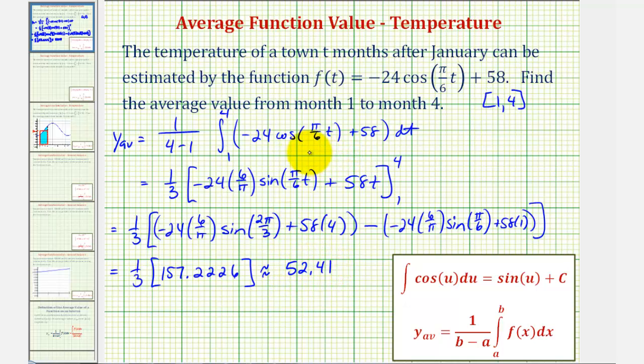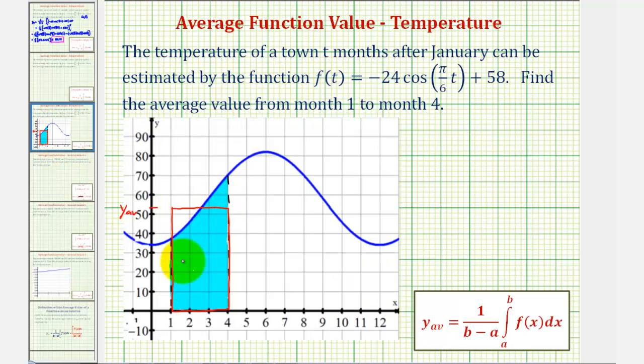Probably the most challenging thing about this problem is being careful with the u substitution, and then trying to enter this into your calculator correctly. If we go back and take a look at the graph again, notice how the height of this rectangle here that has the same area as the area under the curve over this interval would be approximately 52.41. That's the value that we found by determining the average value. I hope you found this helpful.